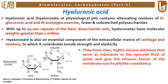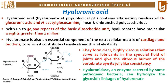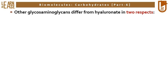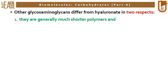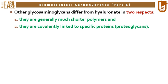Hyaluronate forms clear, highly viscous solutions that serve as lubricants in the synovial fluid of joints and give the vitreous humor of the vertebrate eye its jelly-like consistency. Hyaluronidase, an enzyme secreted by some pathogenic bacteria, can hydrolyze the glycosidic linkages of hyaluronate. Other glycosaminoglycans differ from hyaluronate in two respects: they are generally much shorter polymers, and they are covalently linked to specific proteins known as proteoglycans.